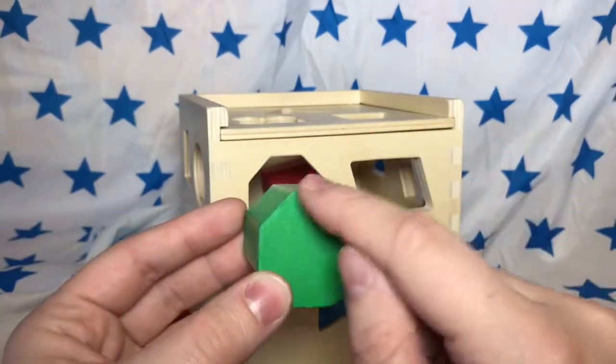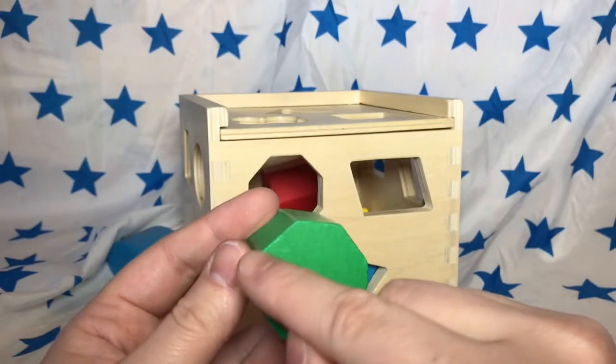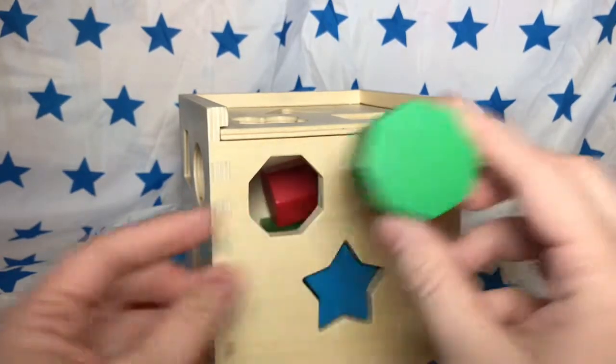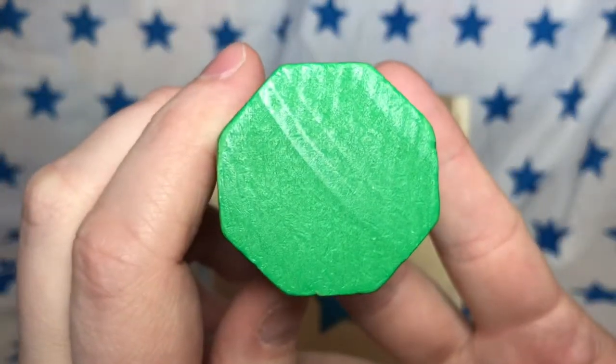One, two, three, four, five, six, seven, eight sides. It's an octagon. A green octagon. Where does it go?